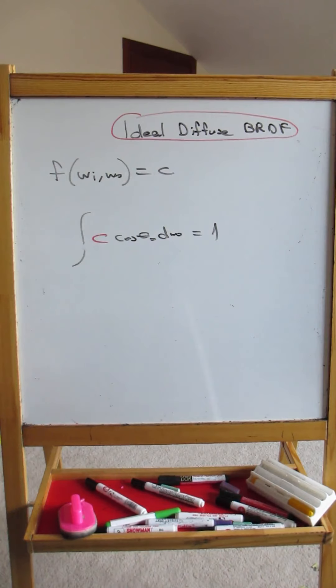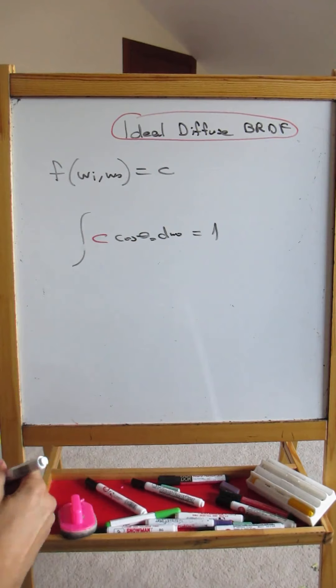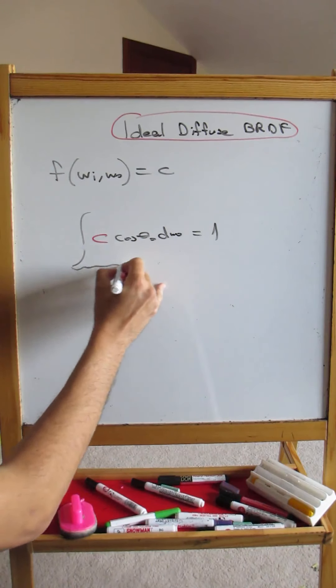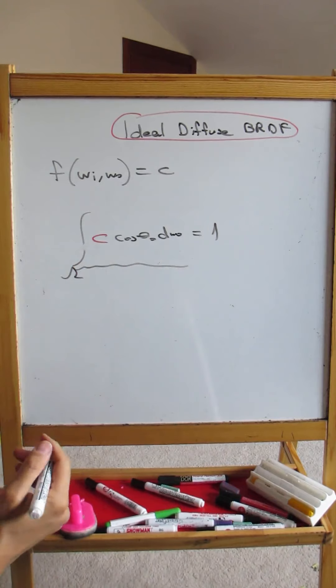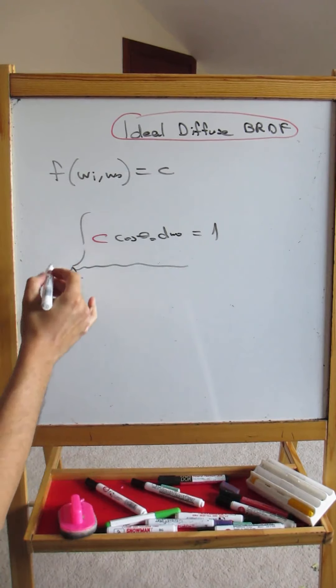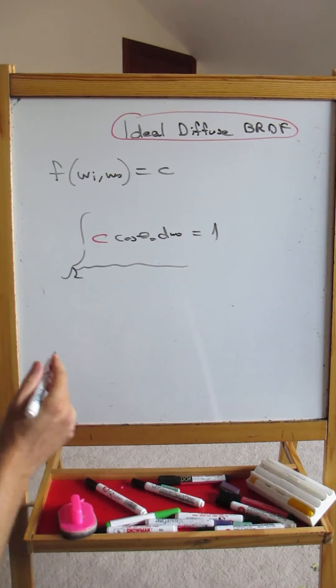Now replacing this with C, let's clear this. Let's put C here. This is equal to 1. So from here, we are going to find C. This integral like that is, we are integrating over the hemisphere, the upper hemisphere.